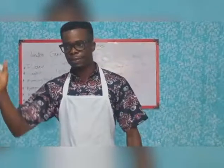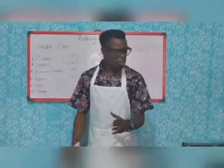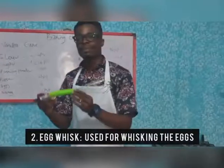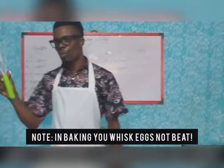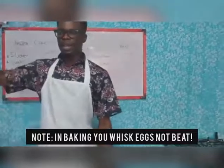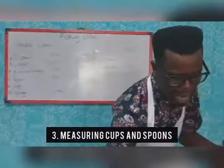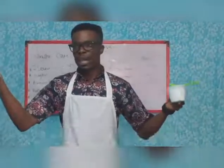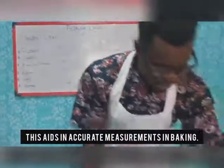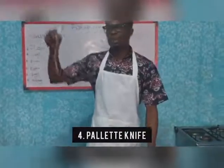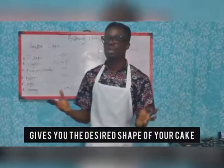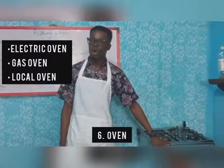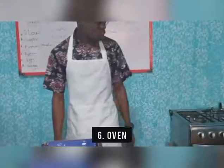I will also introduce a few other equipment we need. The first is the egg whisk — it's used to whisk your egg. In cake baking, you don't say 'beat your egg,' you whisk it, and you whisk with an egg whisk. The next thing we need is measuring cups and spoons, used for accurate measurements in baking. The next is a palette knife, used to check when your cake is ready. We also need a baking pan, which gives your cake its shape, and an oven — electric, gas, or locally made.